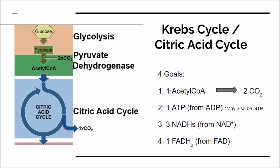You're taking that one acetyl-CoA and reacting it with a bunch of different molecules and enzymes. One of the products is two CO2 molecules and one ATP molecule, as well as three NADH molecules. You're actually reducing NAD+ into NADH through certain intermediate products. Last but not least, you also end up making one FADH2 molecule — so FAD becomes reduced into FADH2.